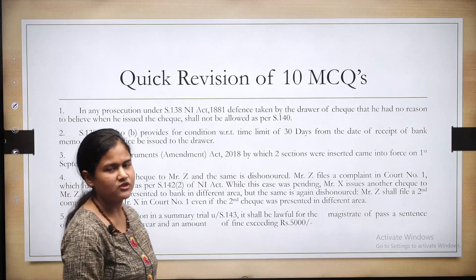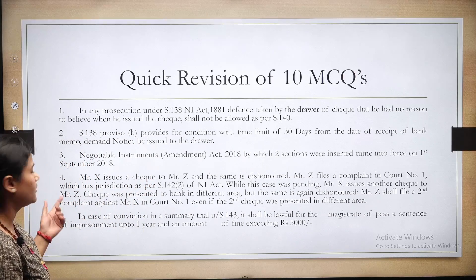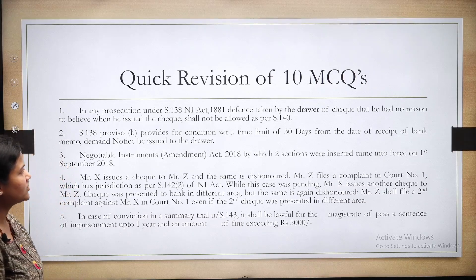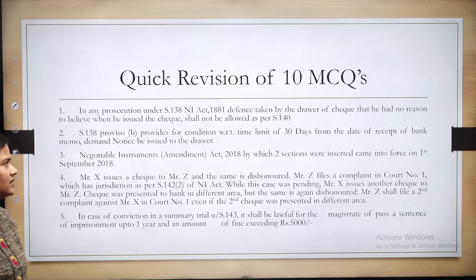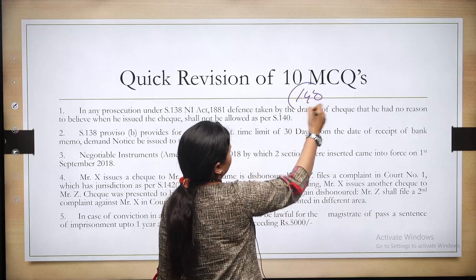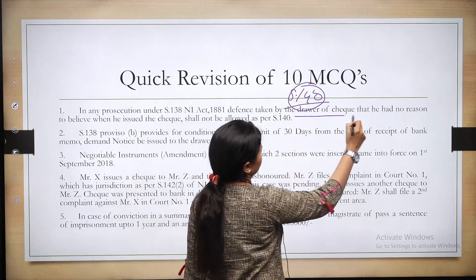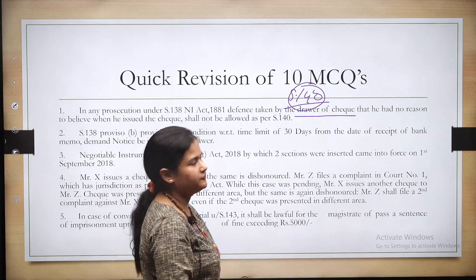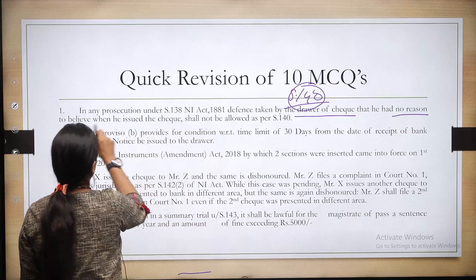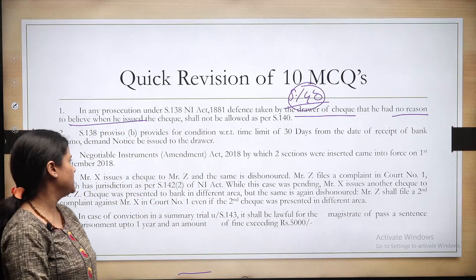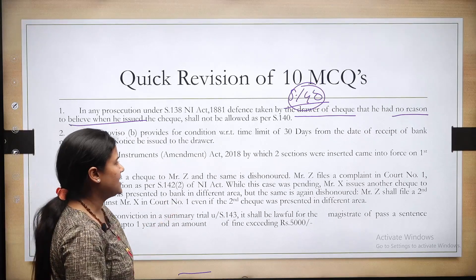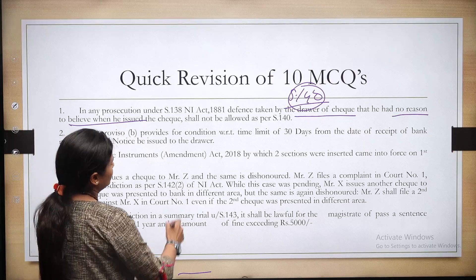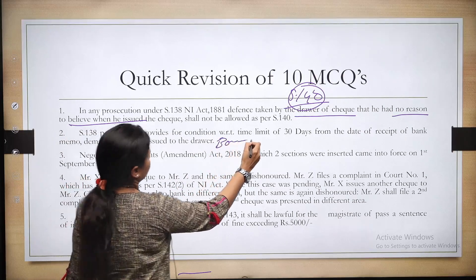Quick revision: First, in any prosecution under section 138, the defense taken by the drawer that he had no reason to believe when he issued the check shall not be allowed — as per section 140. Second, section 138 Proviso B provides for the condition of 30 days from the date of receipt of the bank memo demand notice. When a check is dishonored by the bank, the bank issues a memo to the payee. Within 30 days of receiving that memo, the payee must issue a demand notice to the drawer.